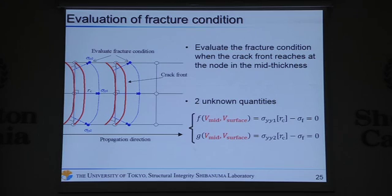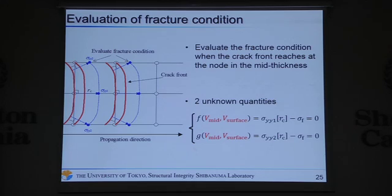We consider how to evaluate the fracture condition in the 3D model. Similarly to the two-dimensional model, we evaluate the fracture condition when the crack front reaches a node in the mid-thickness. But we need two conditions because there are two unknowns: crack velocity in the mid-thickness and in the surface. So we evaluate the stress at two points.